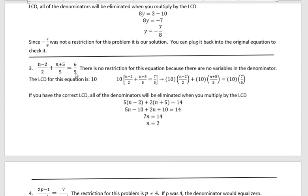In the third one we do not have a restriction because there's no variable in the denominator. 2, 5, and 5 - there's no way those can become 0. So we don't have to worry about a restriction. The LCD is a little easier in this one, it's just 10. You still have to multiply everything by 10.